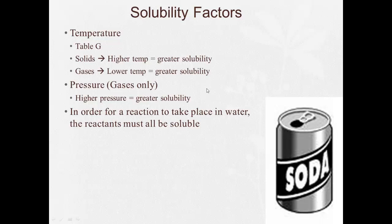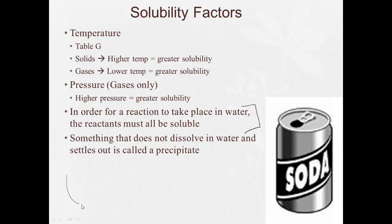In order for a reaction to take place in water, all the reactants must be soluble. There's going to be more on this later on when we get to redox. Now, something that does not dissolve in water and settles out is called a precipitate. That's like the cup of tea - you start putting sugar in. Whatever sugar clumps at the bottom is referred to as a precipitate. When there's a chemical reaction that takes place in water, some of the stuff might be dissolved, others might settle out to the bottom, that's also referred to as a precipitate.